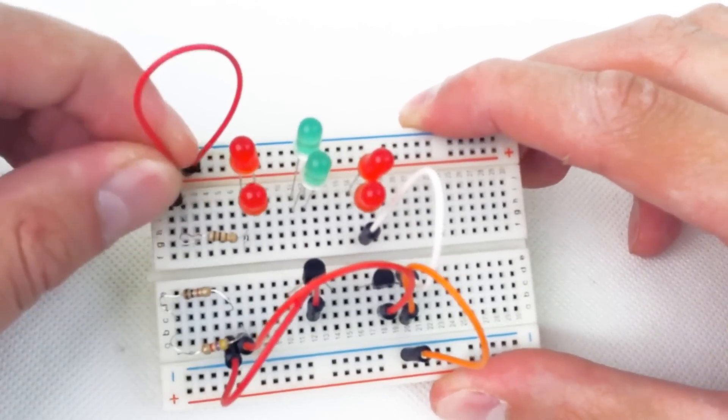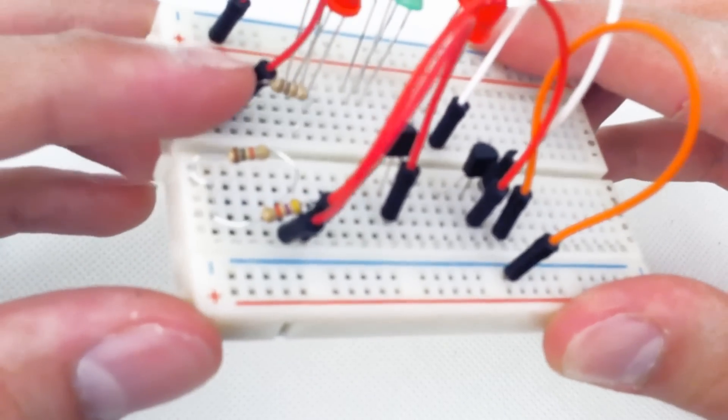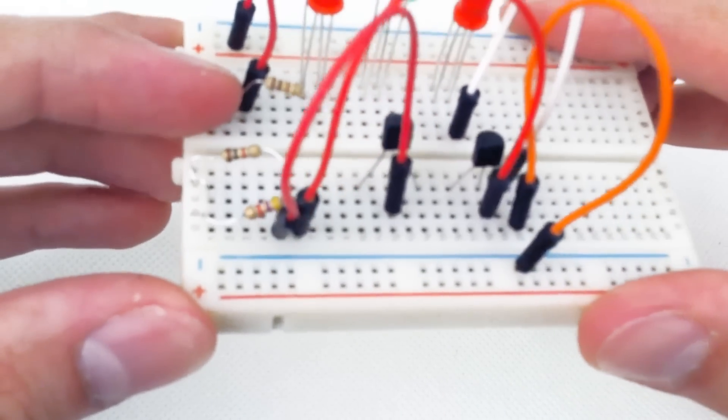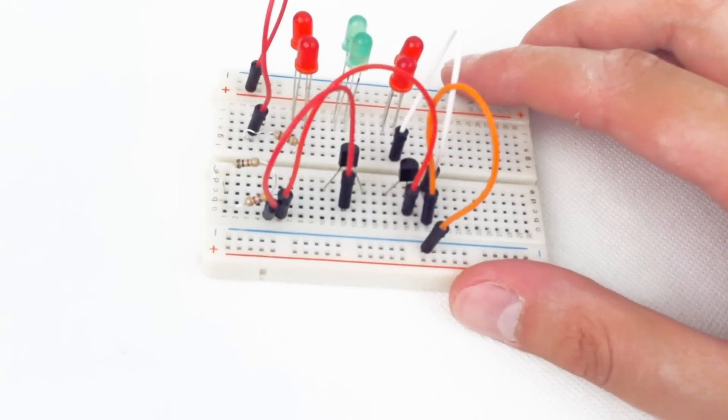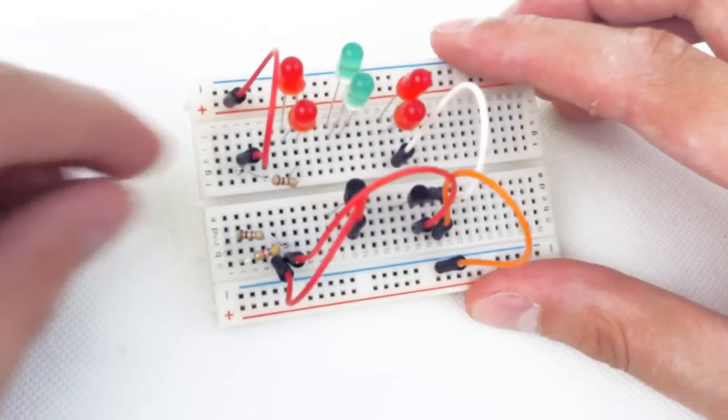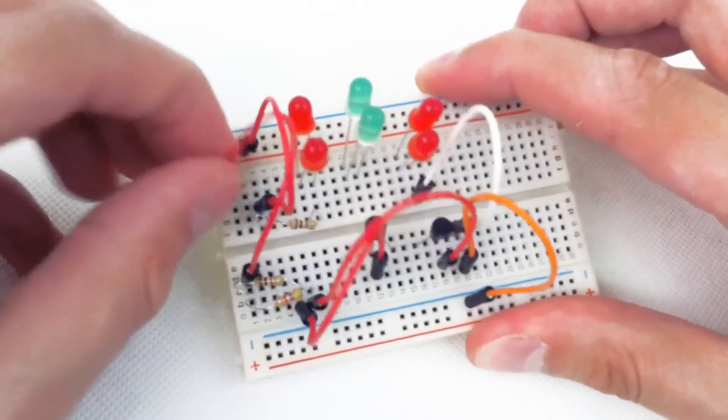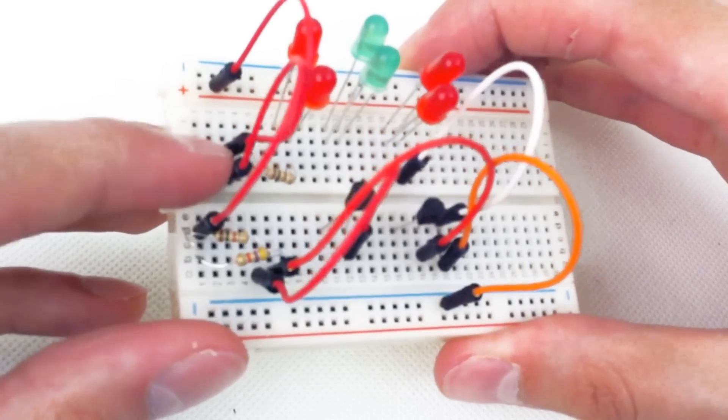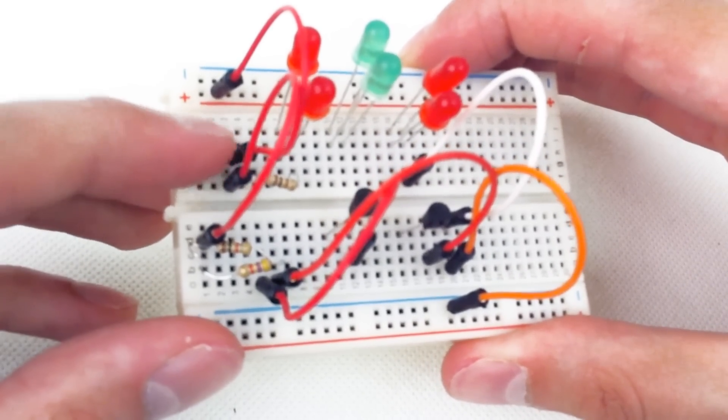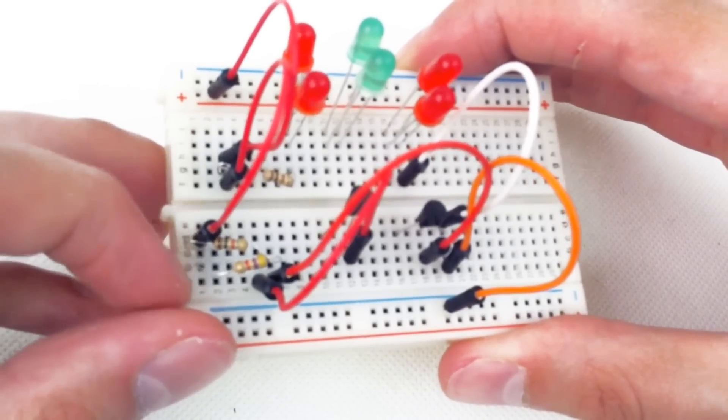And then positive power supply to the 100 ohm resistor. And connect up to the 4.7K and the 1K to 100 ohm. So these three are on the same set of holes: positive power supply, 100 ohm, and the lead from the two resistors here.